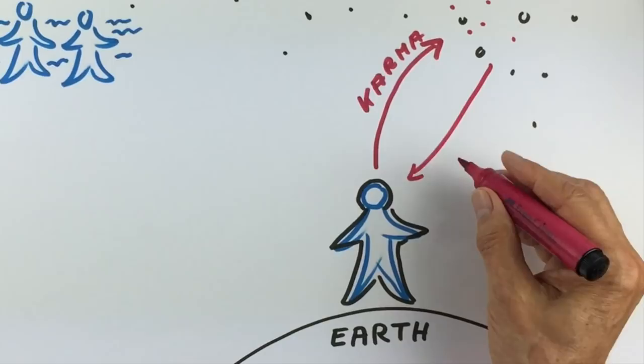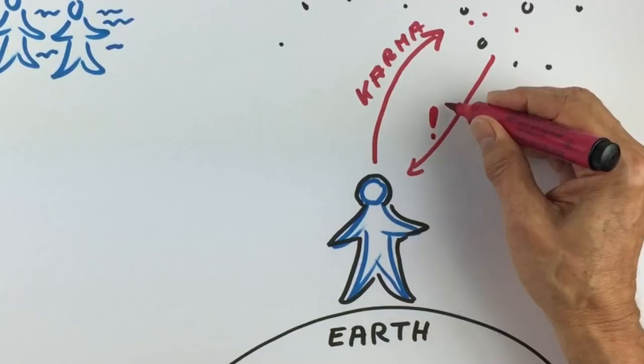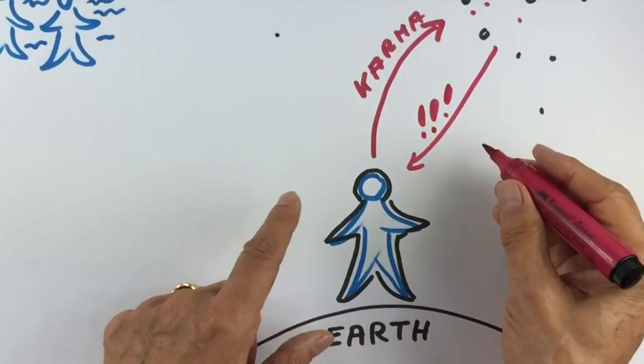But before they fully manifest in our lives, the repository planets are sending us warning impulses via our soul to clear up these karmic burdens before they hit us in full measure.